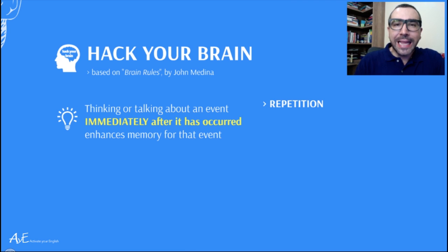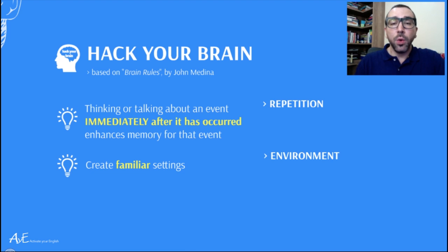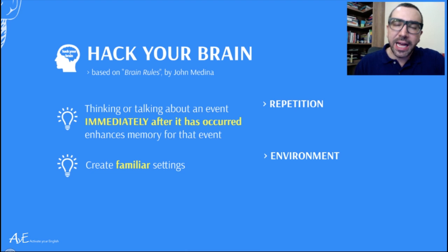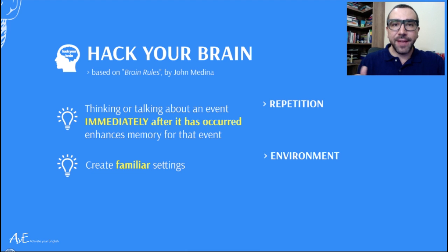The second way you can hack your brain into learning a foreign language is by creating familiar settings. Your environment plays an important role in helping you memorize and internalize pieces of vocabulary. Have a comfortable chair and a very organized desk so that it becomes familiar, and when you retrieve that information, you can do so in a very effective way.